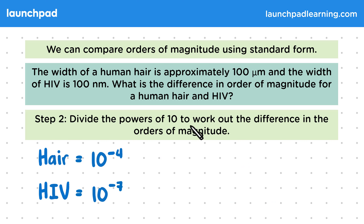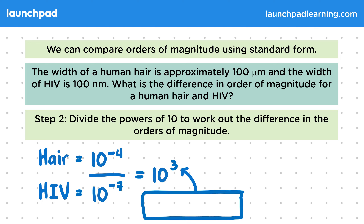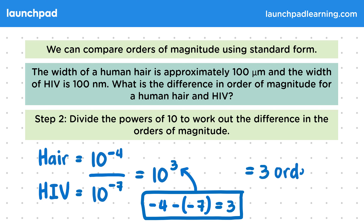Step two: divide the powers of 10 to work out the difference in the orders of magnitude. If we divide these two values, we get 10 to the power of 3. Remember that when you divide powers — such as 10 to the power of minus 4 divided by 10 to the power of minus 7 — you subtract the exponents from each other. So we do minus 4 minus minus 7, which equals 3. Bear in mind that two minuses make a plus, so this equals positive 3. This gives us a difference of three orders of magnitude between the width of HIV and the width of a human hair. This also means that the human hair is 1,000 times bigger than an HIV particle, because 10 to the power of 3 is equal to 1,000.